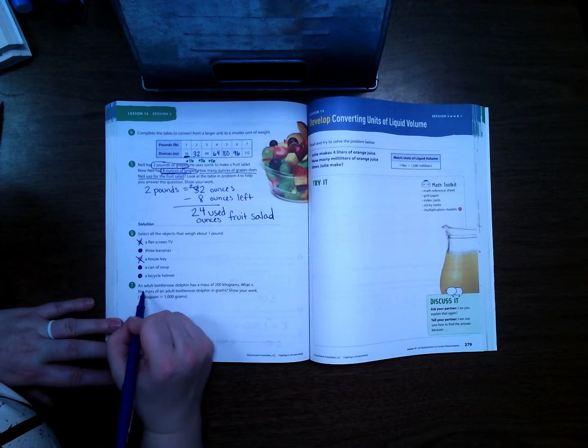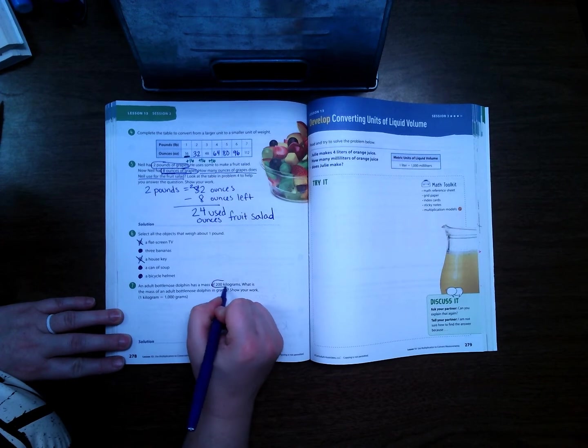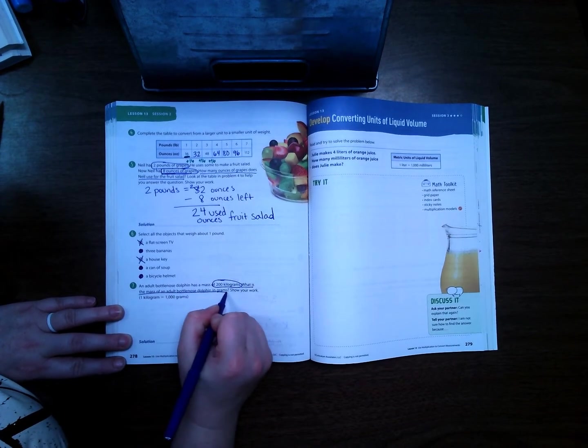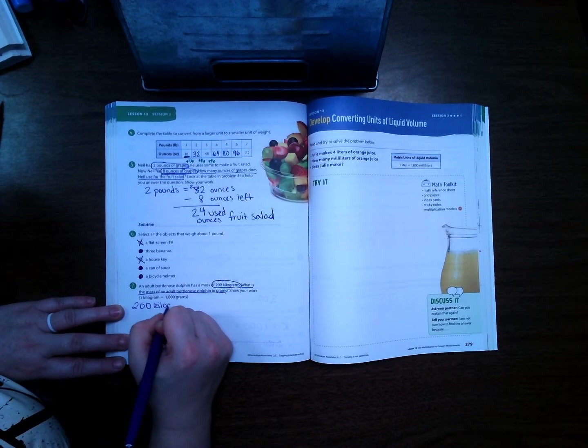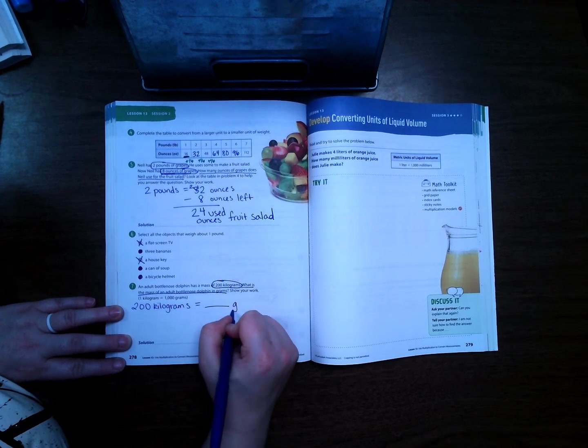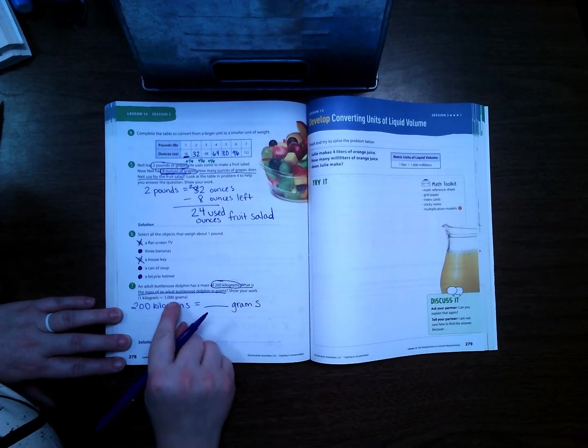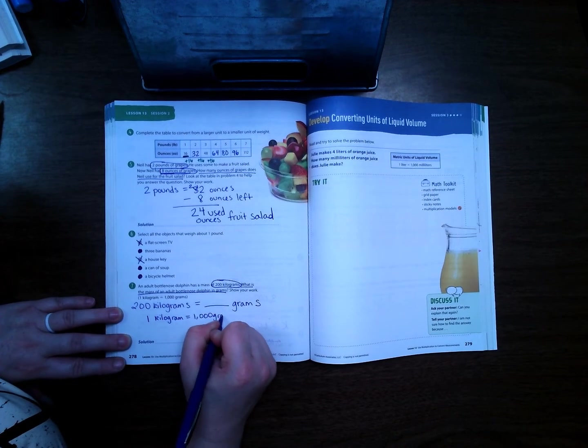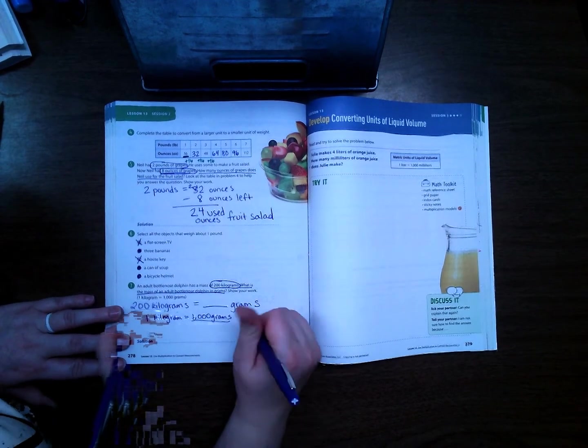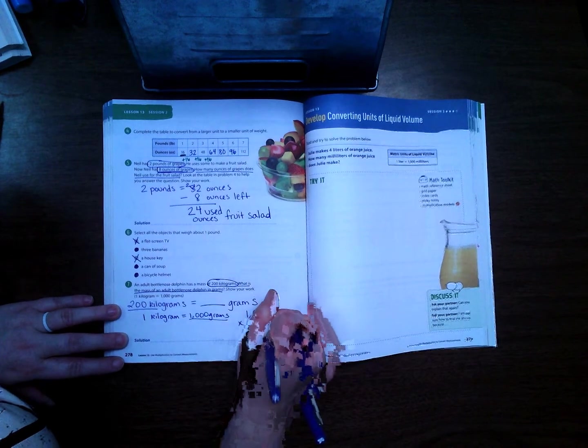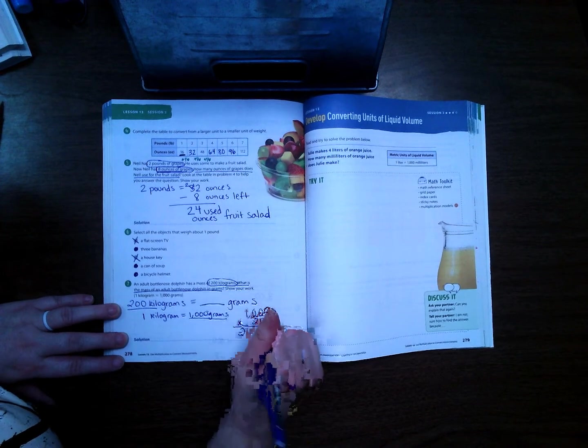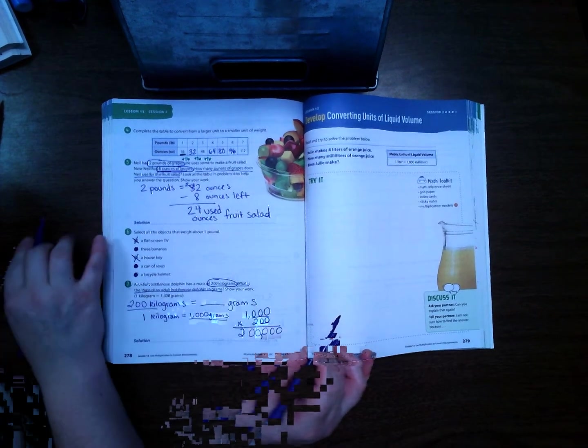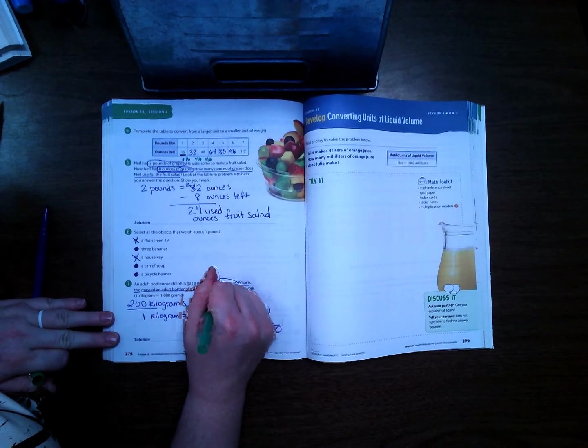Last one for today. An adult bottlenose dolphin has a mass of 200 kilograms. What is the mass of an adult bottlenose dolphin in grams? We're going to take 200 kilograms equals how many grams? Well I know that 1 kilogram equals 1,000 grams, so I'm going to multiply this number by that number. 1,000 times 200. I can take 1 times 2 is 2 and then just add all my zeros here, add my comma, and so I see that it is equal to 200,000 grams.